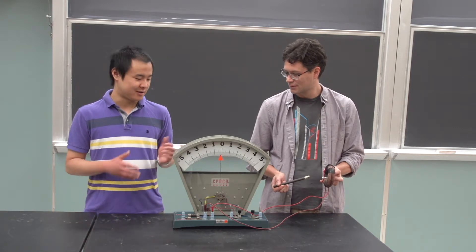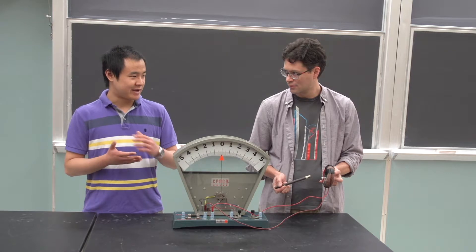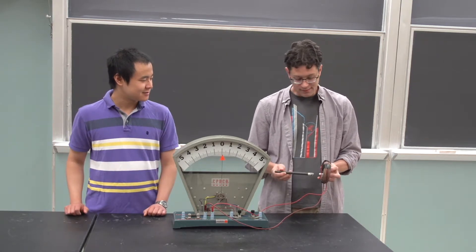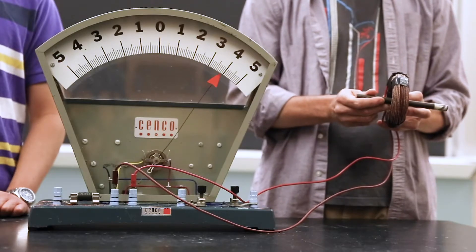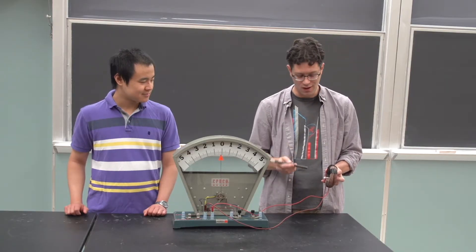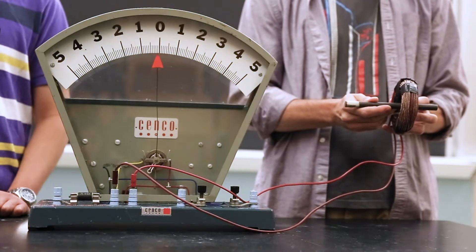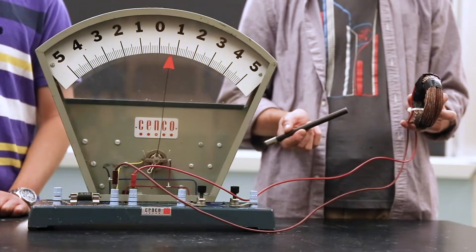So if you want to reverse the direction of current, then you would reverse the direction of your magnet that's moving. Yeah, either that. So either going in versus going out reverses the current. But you're right, I can also go from North to South, and then going in gives me a negative—the opposite that we had before—and going out gives positive.